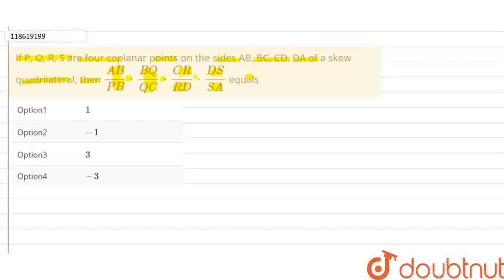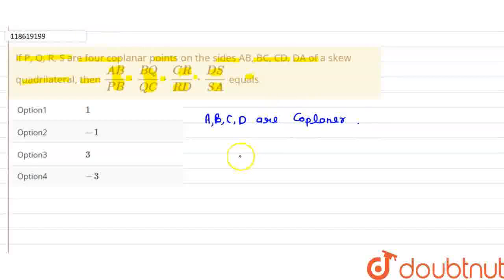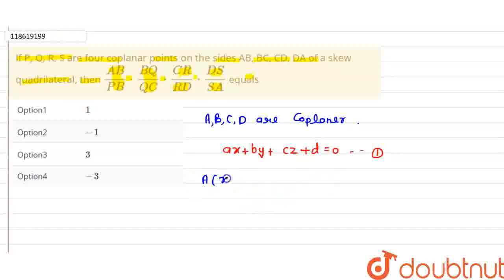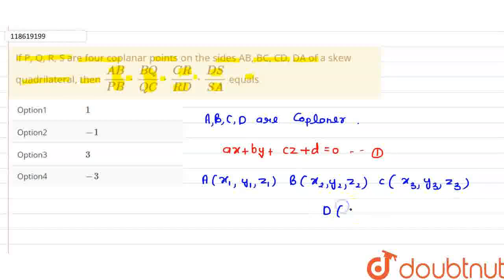So we have ABCD as a quadrilateral. ABCD are coplanar — they lie on a plane. So I assume the plane equation here: Ax + By + Cz + D = 0. This is equation (1). ABCD lie on this plane. I assume coordinates: A is (x1, y1, z1), B is (x2, y2, z2), C is (x3, y3, z3), and D is (x4, y4, z4).